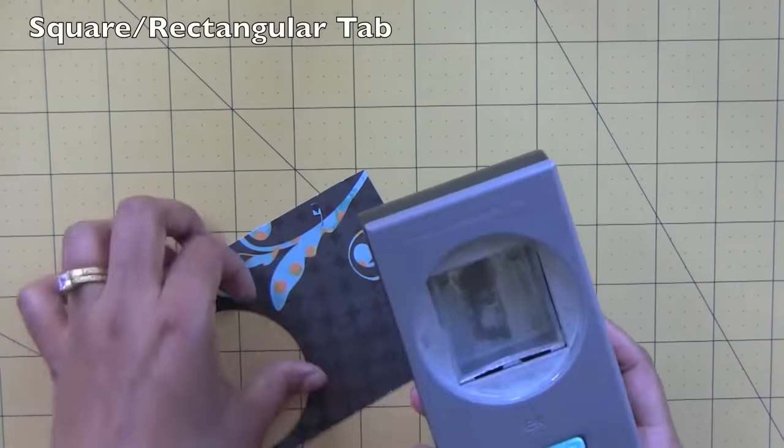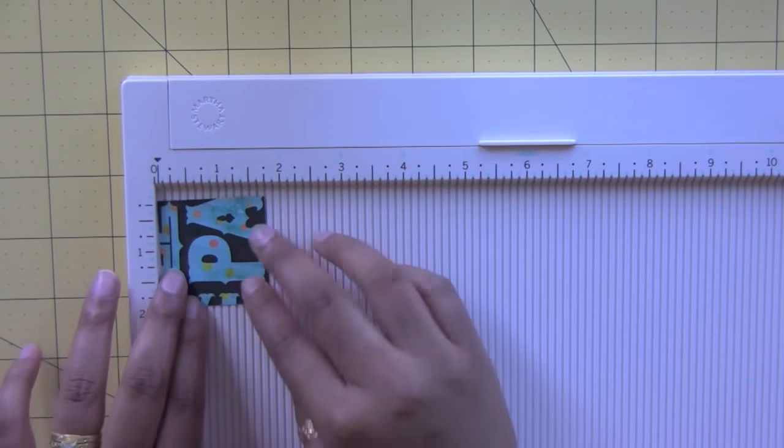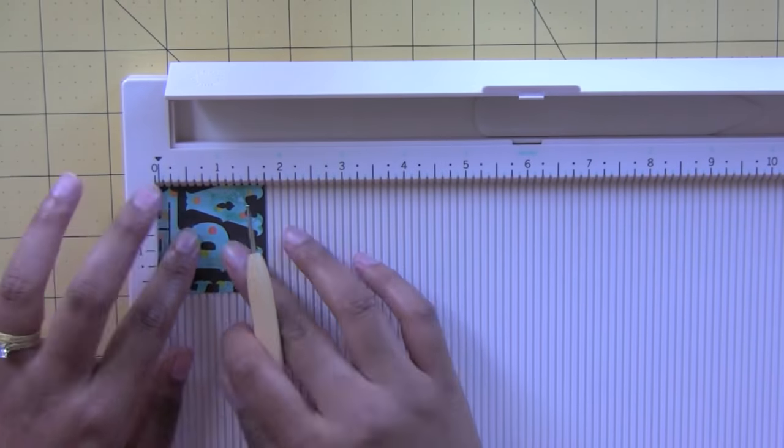For the square or rectangular tab, you're going to need a square punch. This one is one and three quarter inches. I'm going to take my scoreboard and score it right down the middle.